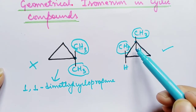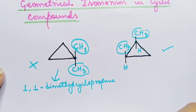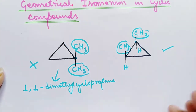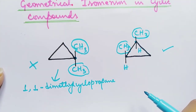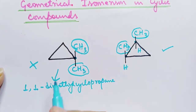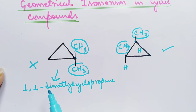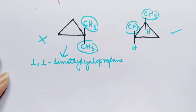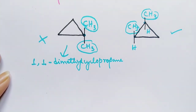So a requirement for geometrical isomerism in cyclic compounds is that there must be at least two groups besides hydrogens on the ring, and these two must be on different ring carbon atoms. That's why only the second one shows geometrical isomerism, whereas the first one does not, because the two groups are on the same ring carbon atom.